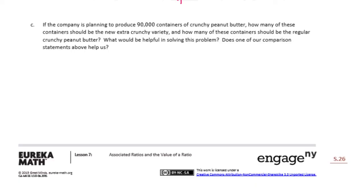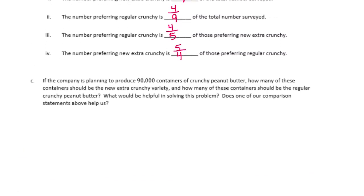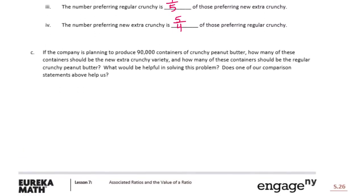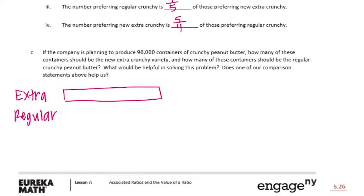Part C: if the company plans to produce 90,000 containers of crunchy peanut butter, how many should be the new extra crunchy variety and how many should be regular crunchy? We can use a tape diagram. Extra crunchy to regular crunchy is five to four, so let's draw that out.